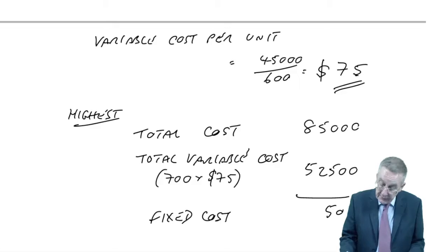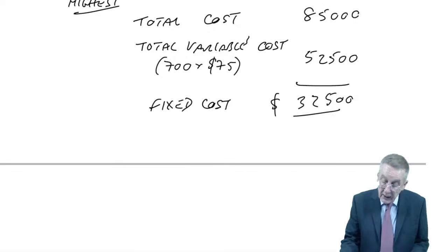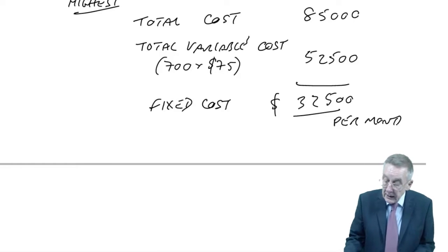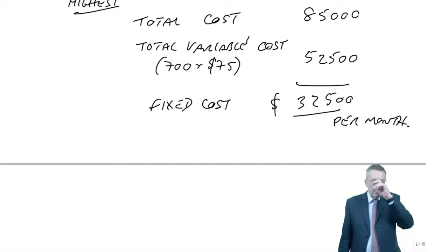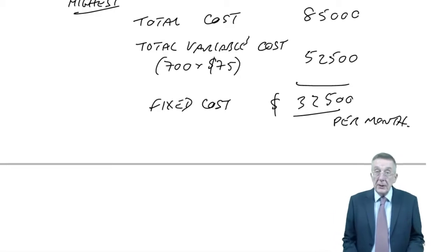I also want to know the fixed cost. Go back to the highest month. We know the total cost was 85,000. That must be the total of the variable and the fixed. In the highest month, it was 700 units. We've calculated each unit had a variable cost of 75. So the total variable cost is 52,500. Therefore, the remainder of the 85,000 must be the fixed cost, which is 32,500 per month.